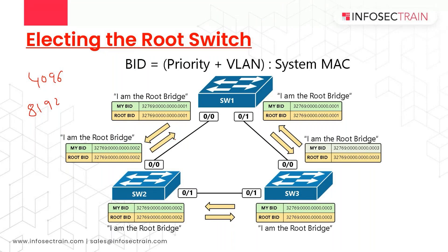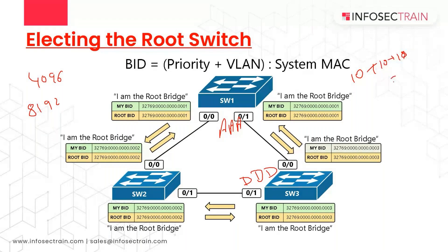No other tiebreaker should be needed because switches use their own universal MAC address in the second part of their Bridge ID. If priorities tie, for example one switch has MAC AAA and another has DDD: AAA means 10+10+10=30, while DDD means 13+13+13=39, so the switch with AAA wins because its value is lower. That switch becomes the root switch or root bridge.